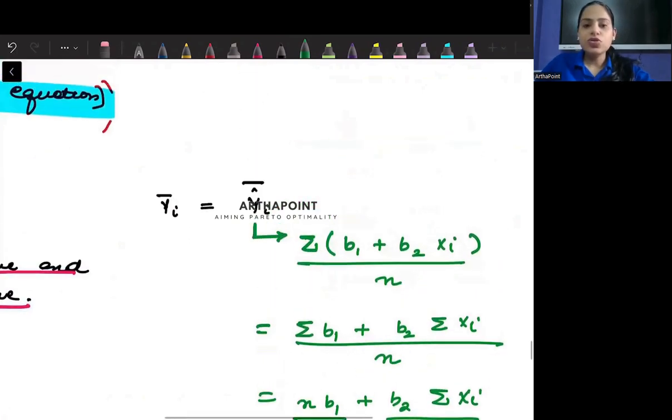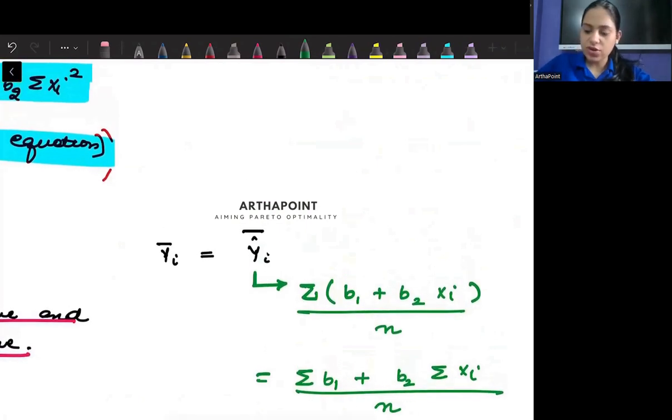Now if I look into yi, then yi will be b1 plus b2 xi plus ei. So if I were to find its mean,